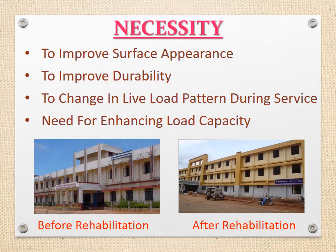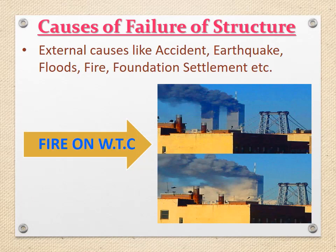In the figure below we can see the difference in appearance of a structure before and after rehabilitation. Causes of failure of a structure: a structure may fail due to many reasons. First, external causes like accident, earthquake, floods, fire, foundation settlement, etc. During the terrorist attack in 2001, the World Trade Center in New York City was destroyed; rehabilitation may be needed to make it workable again.